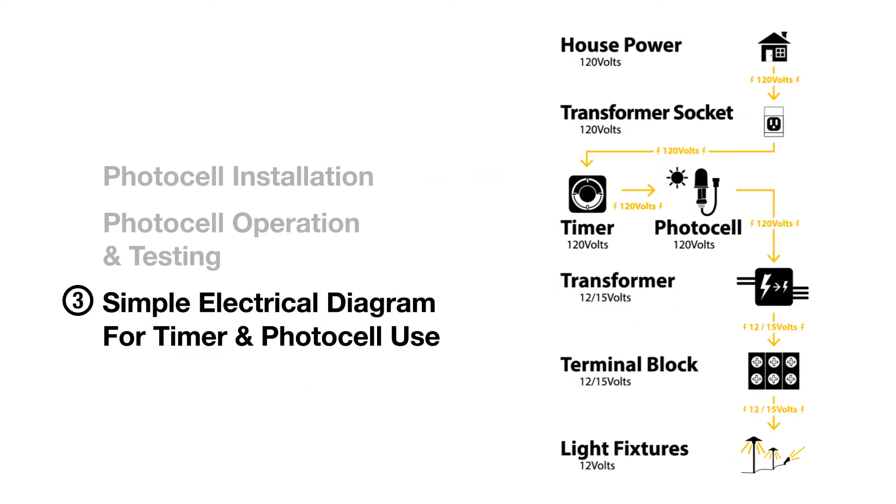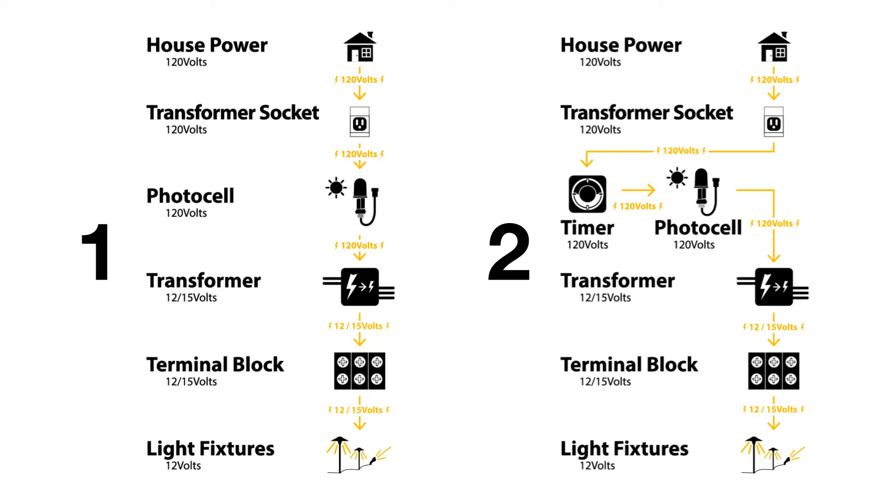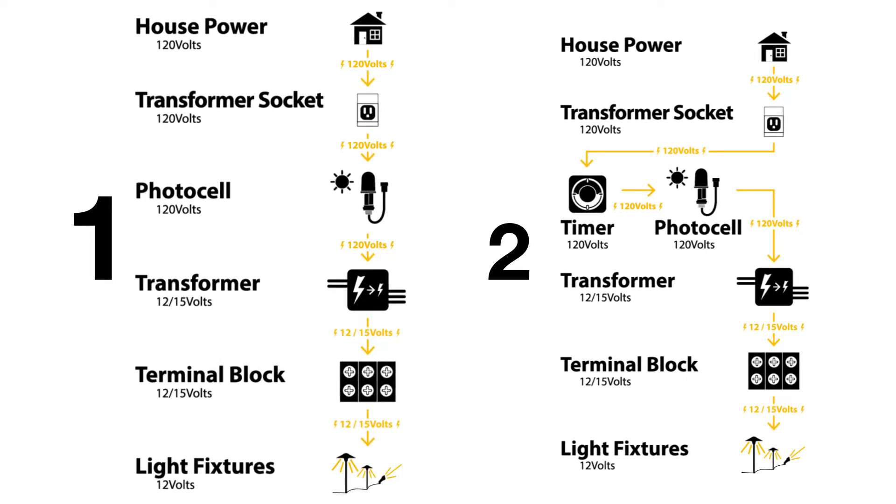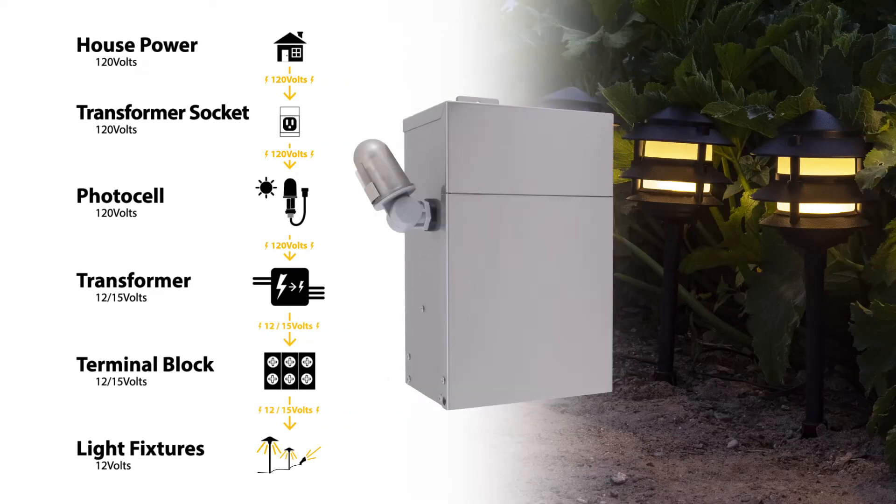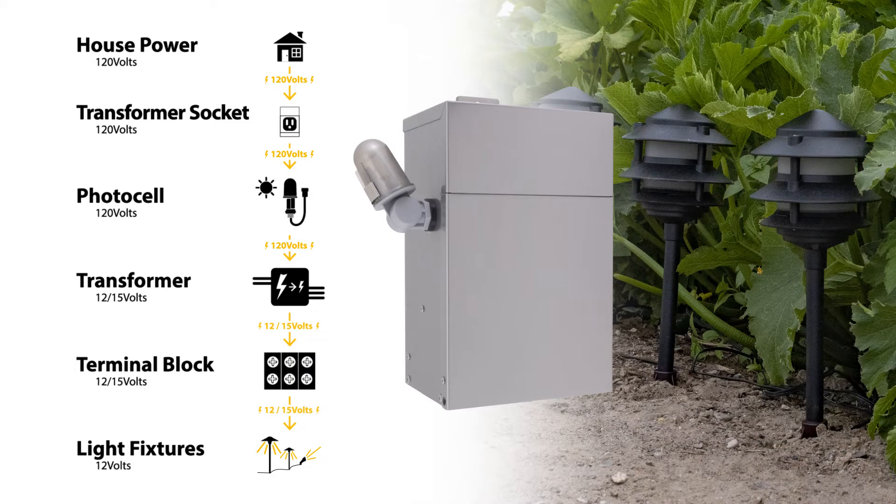Simple Electrical Diagram. I'm going to walk you through two separate diagrams. The first one is the use of the photocell only. Let's look at that flowchart. Using just the photocell turns the lights on at dark and off at sunrise. Simple.